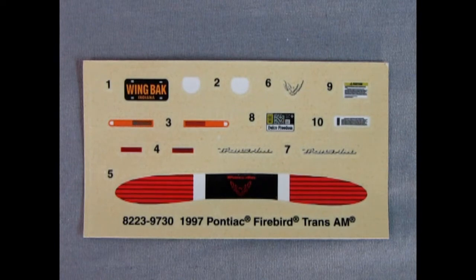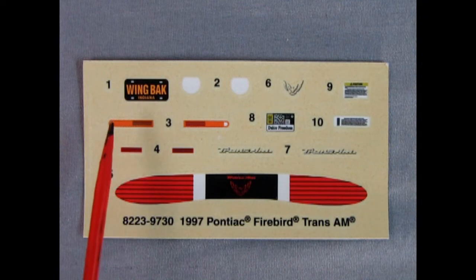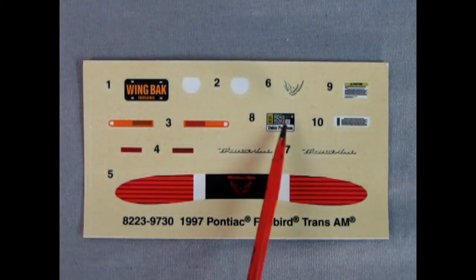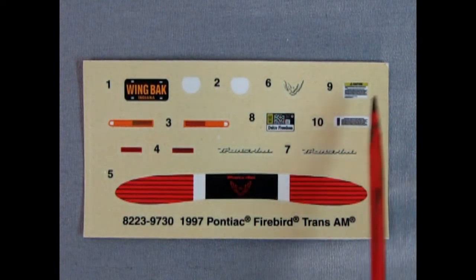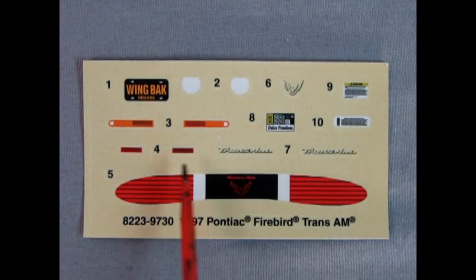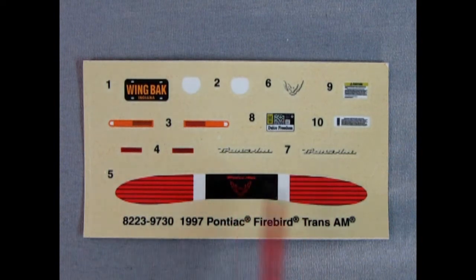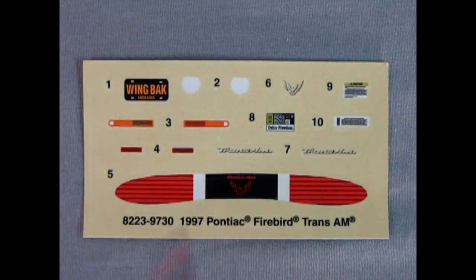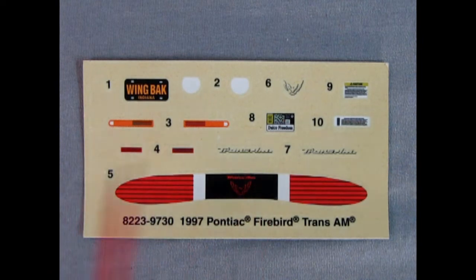Here I am once again with the decal sheet for our 1997 Pontiac Firebird Trans Am. We got this lovely wing back license plate from Indiana, as well as these front signal lights, and then our Pontiac emblem right there, and some of the details for under the hood, as well as Pontiac script. Firebird, I think it says. As well as the rear tail panel with the tail lights, and our side marker lights. Really cool decal sheet. Not much in the way of like flames or side stripes, but I like it.